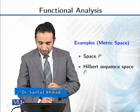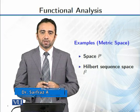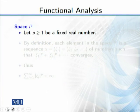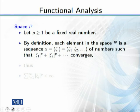Then we have a particular case for p equals 2, that is Hilbert sequence space. If p comes to 2, then we will discuss Hilbert sequence space. Now, where are elements from this? Let p be greater than or equal to 1, be a fixed real number. By definition, each element in this space l^p is a sequence x of the form ξ_1, ξ_2, and so on, a sequence of numbers such that |ξ_1|^p + |ξ_2|^p + ... converges.